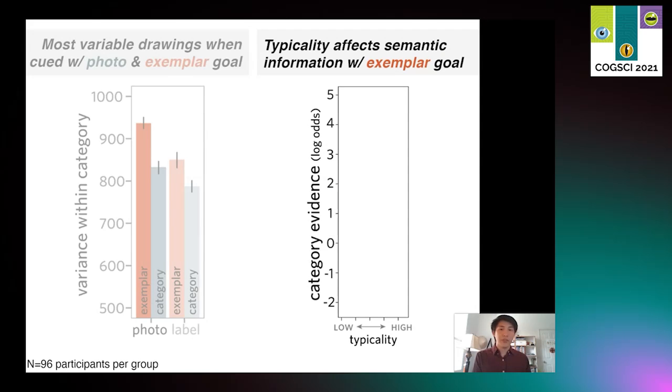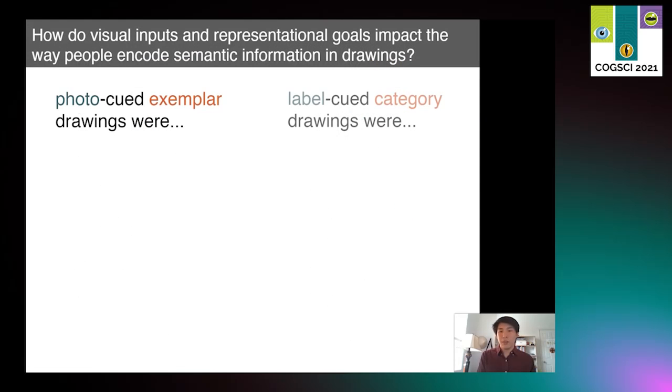Here we plot the category-level evidence of photo-cued drawings on the y-axis vary across human-rated typicality judgments on the x-axis. When drawing with the goal to convey category information, typicality didn't explain much variation in category evidence. We should expect this though, since in this condition participants were specifically instructed to not make their drawings actually look like the object in the photo, but rather it should convey a category concept. But for the exemplar drawings, the more typical the cue, the more category evidence the drawing contained. This suggests that similar visual attributes are diagnostic of category identity in both photos and drawings.